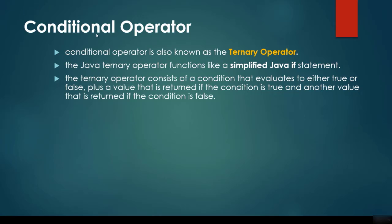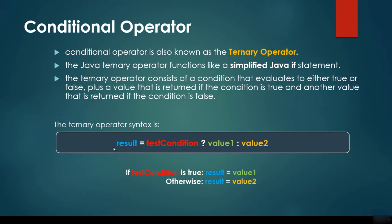We have conditional operators. A conditional operator is also known as the ternary operator. The Java ternary operator functions like a simplified if statement. It consists of a condition that evaluates to true or false, a value returned if true, and a value returned if false. The syntax is: result = (test condition) ? value1 : value2.